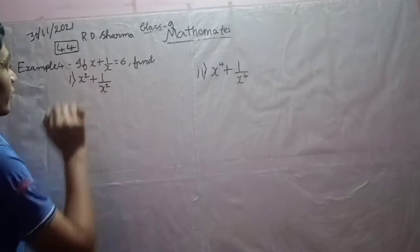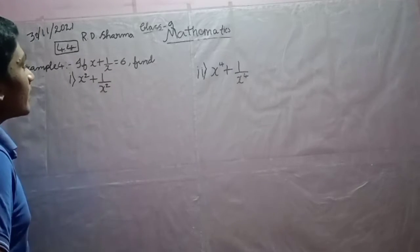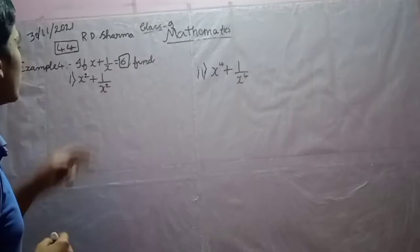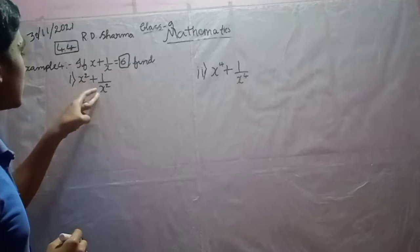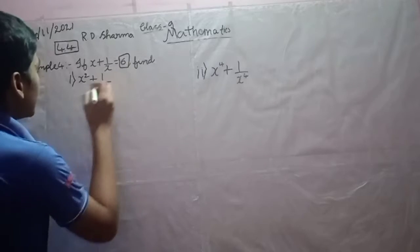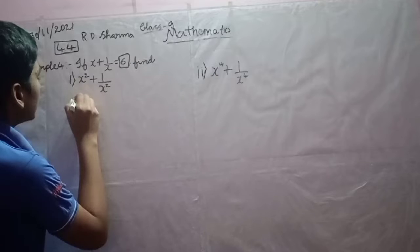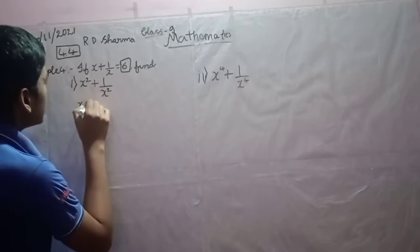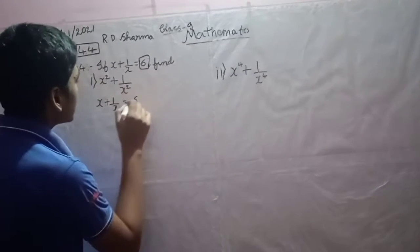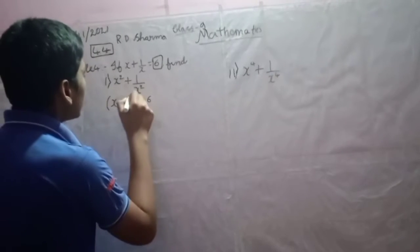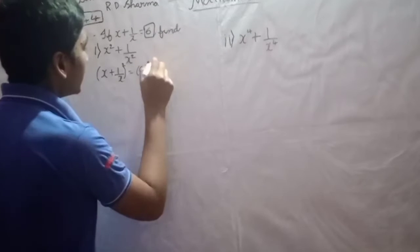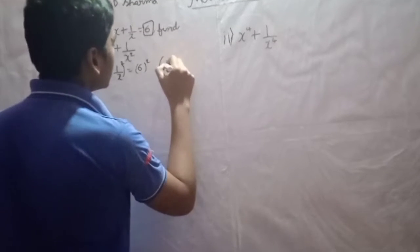The first part asks: if x plus 1 by x equals 6, we are given the value of x plus 1 by x, and we need to find the value of x squared plus 1 by x squared. To find this, let us first write the given: x plus 1 by x is equal to 6. Let us square both sides.